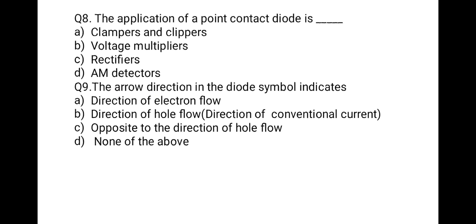The next question is: the application of a point contact diode is — option one: clampers and clippers; option two: voltage multipliers; option three: rectifier; option four: AM detector. Point contact diodes are widely used in communication, so the correct option is AM detector.